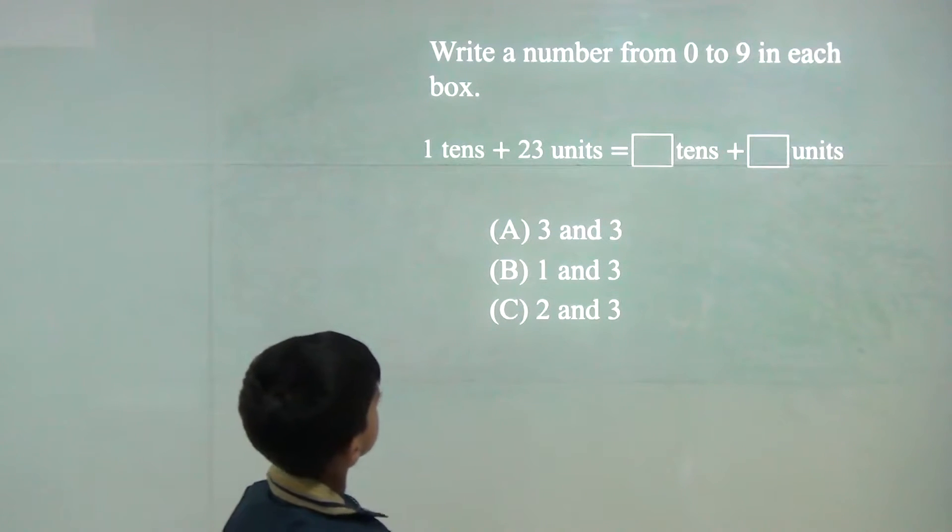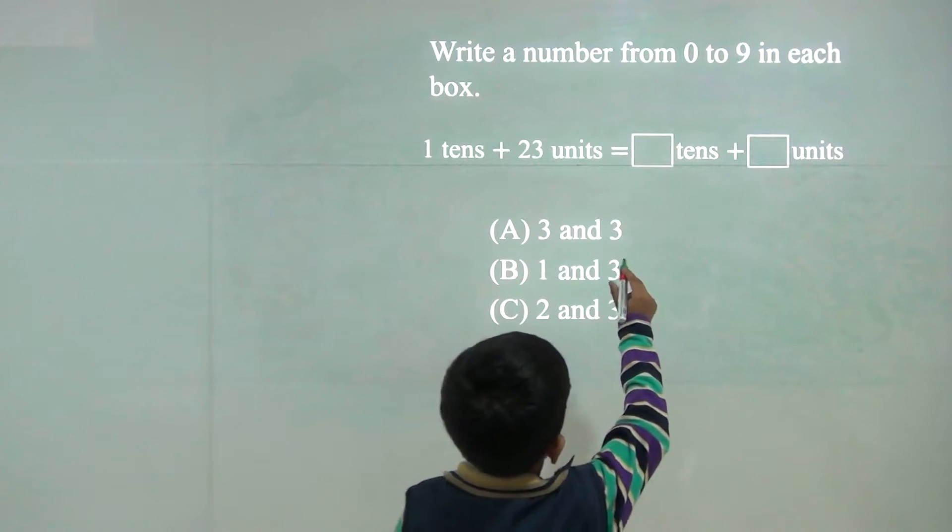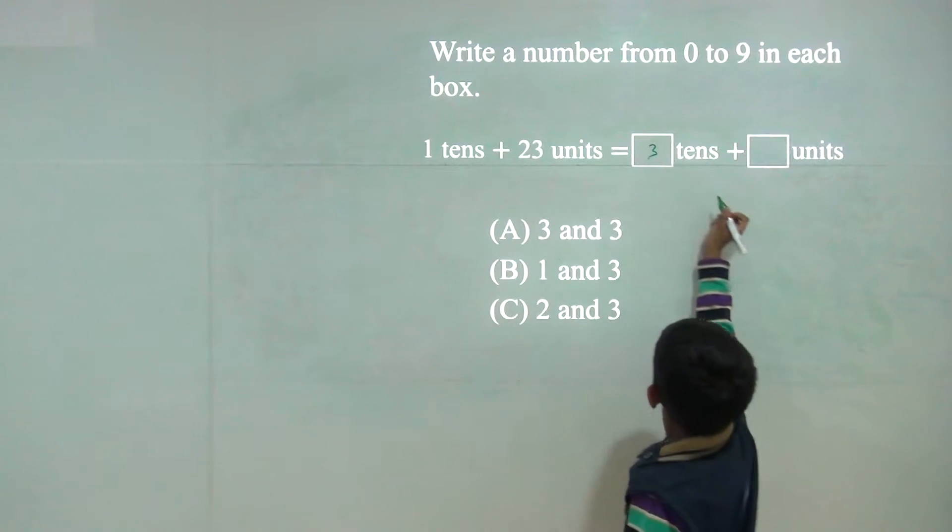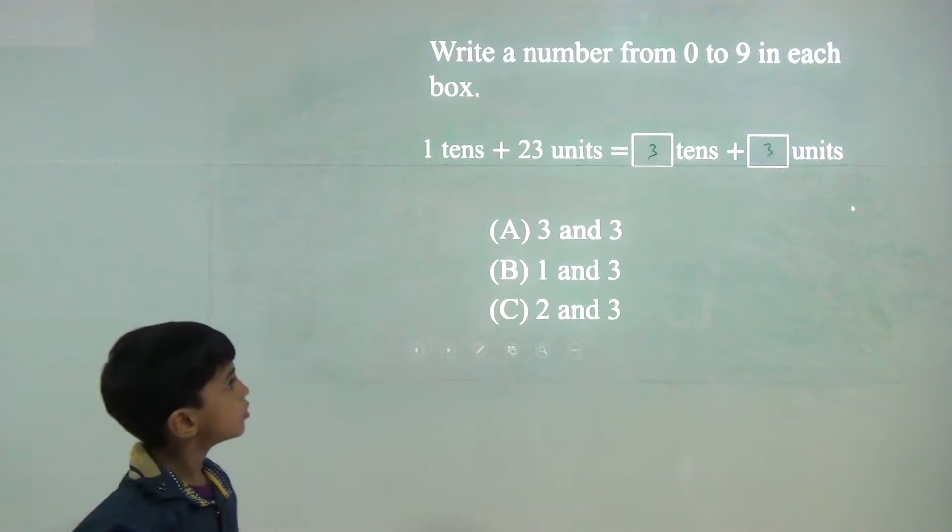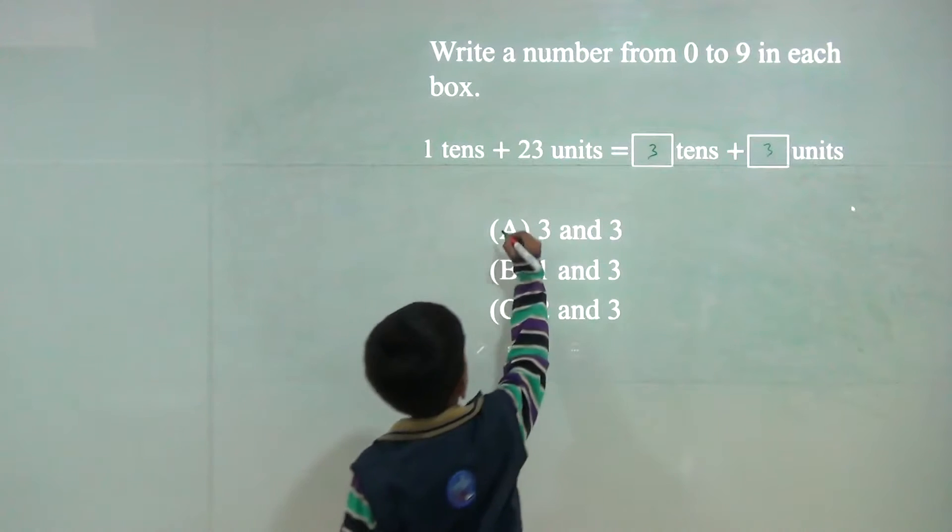Now 33. So how many tens? 3 tens and 3 ones, 3 units. So answer would be B.